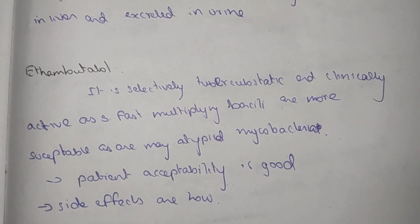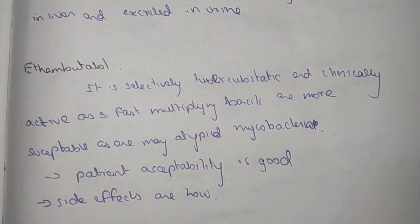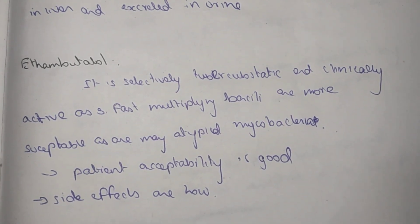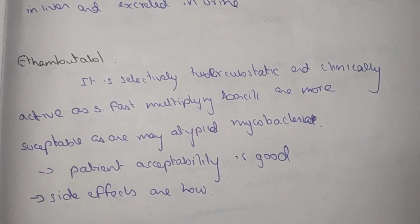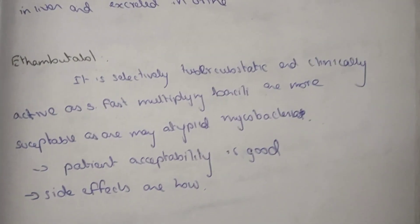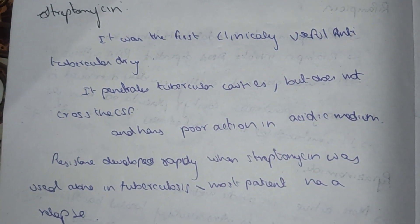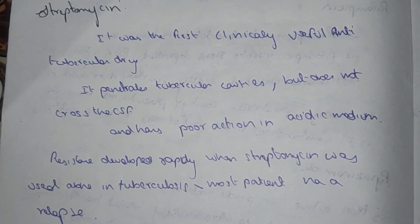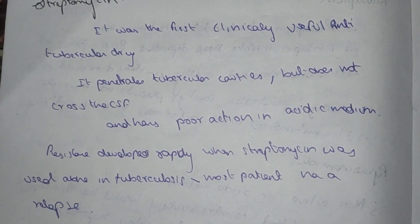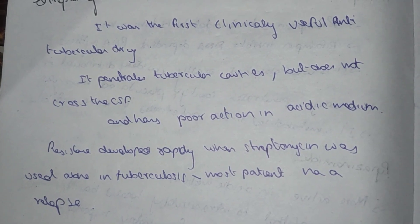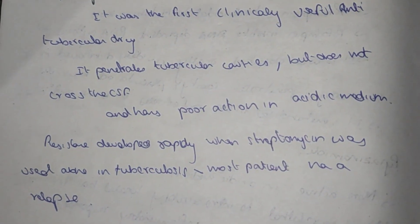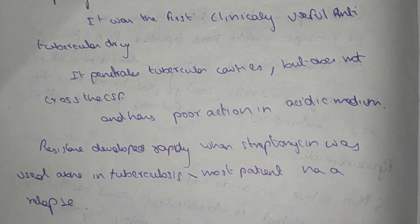Atypical Mycobacteria are more susceptible. Patient acceptability is good with relatively fewer side effects. Ethambutol is the first clinically useful anti-tubercular drug.